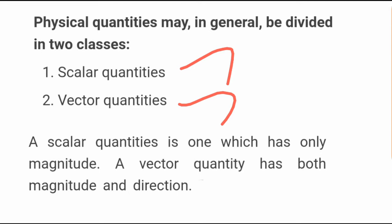What is scalar and vector quantities? A scalar quantity is one which has only magnitude. Magnitude means the size. A vector quantity has both magnitude and direction.